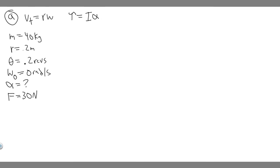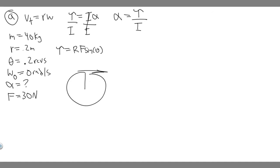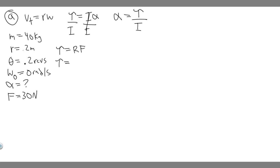Dividing both sides by I gives alpha = torque / inertia. Let's start with torque. The formula is τ = R × F × sin(θ), where θ is the angle between the radius and the force. Since the force is tangent to the rim, it's perpendicular to the radius — 90 degrees — and sin(90°) = 1. So torque is just R × F = 0.2 meters × 30 newtons.